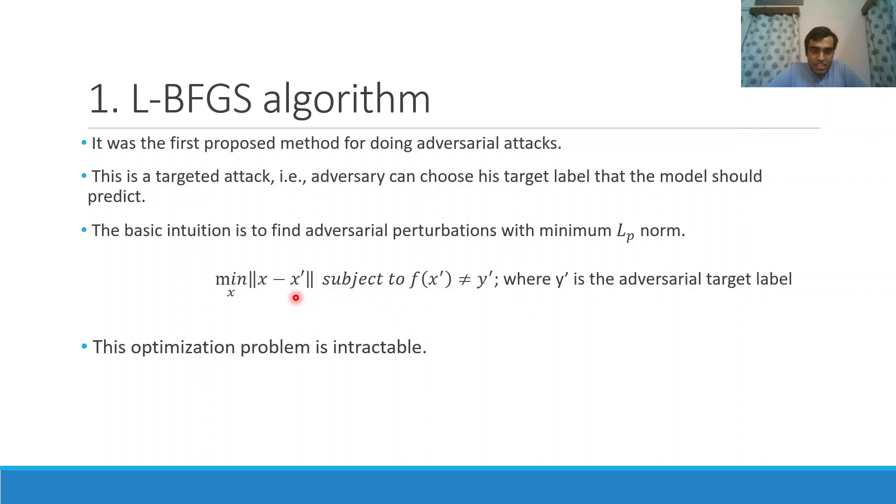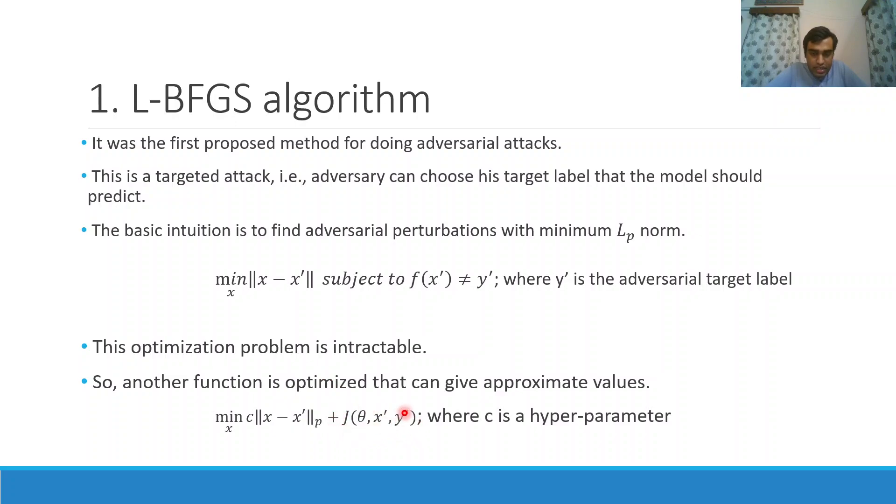Now this optimization problem is intractable. See, an image is a collection of many pixels. Each pixel can be tweaked differently and to a range of values. If we try to generate all those perturbations one by one, then the total number of search cases will be exponential, so the problem will become intractable. To work around this obstacle, we modify this objective function a little bit to include this adversarial loss. Now this expression can be maximized using a line search method, which is a gradient-based method.